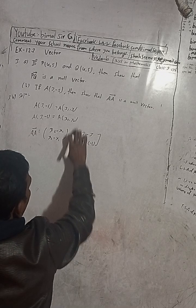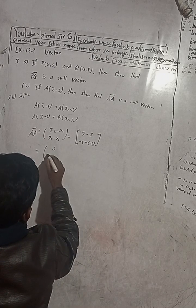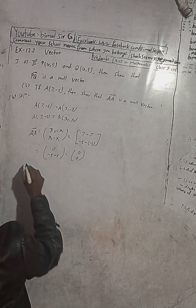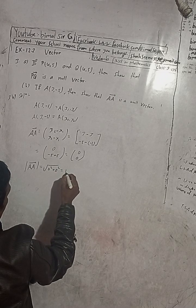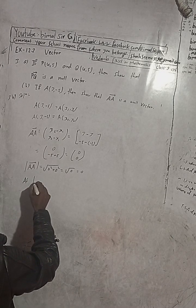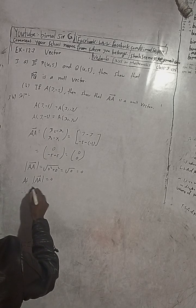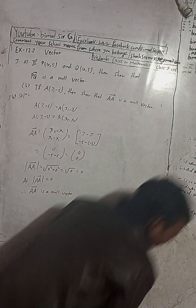So x2 minus x1 is 3 minus 3, and y2 minus y1 is minus 5 minus (minus 5). Three minus three equals zero, and minus five plus five equals zero. So we get (0, 0). The modulus of AA vector equals the square root of (0 squared plus 0 squared) equals zero. Therefore, as the modulus of AA vector is equal to zero, AA vector is a null vector.